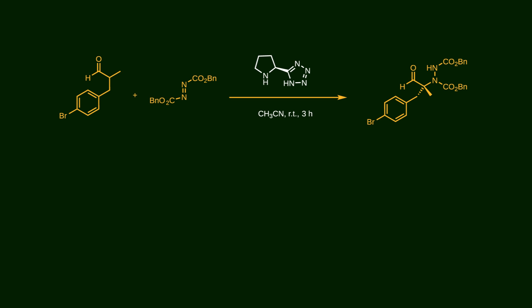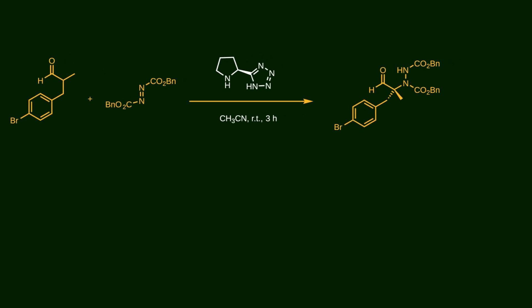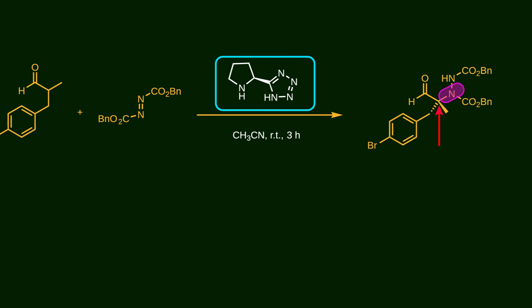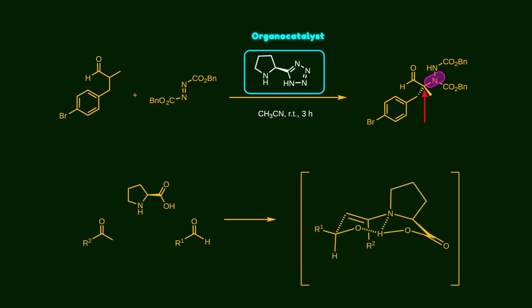Now we have an enolizable aldehyde that reacts with this diazine to form a carbon-nitrogen bond and at the same time creates a chiral center. To ensure the chiral center is correctly installed, a tetrazole derivative of proline is used as an organocatalyst. At the beginning of the video, you saw how three components can organize into a six-membered ring transition state through hydrogen bonding to induce chirality in the product. This reaction follows the same rule.